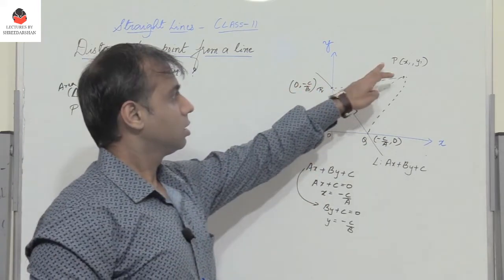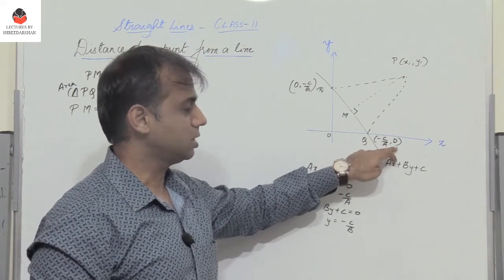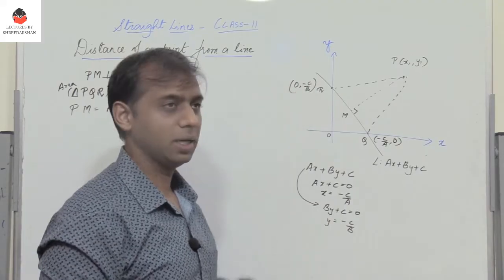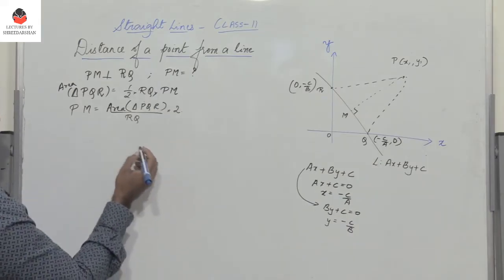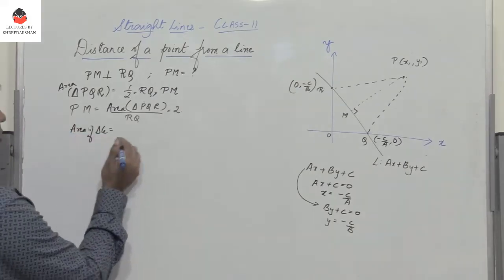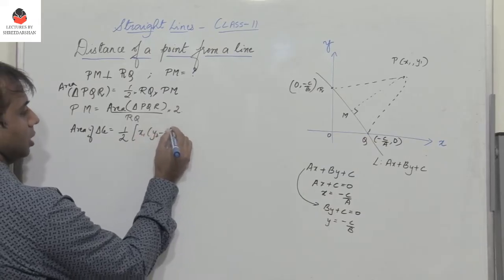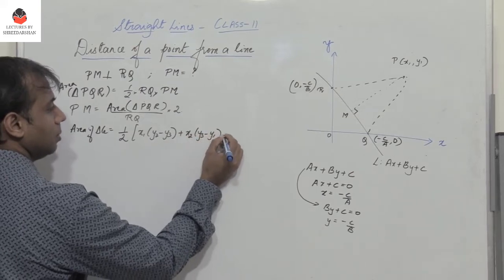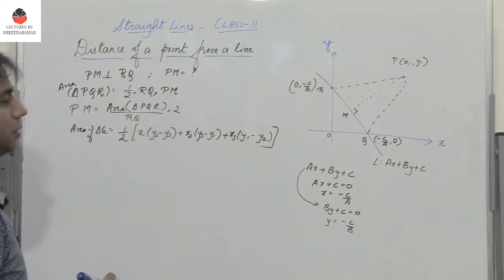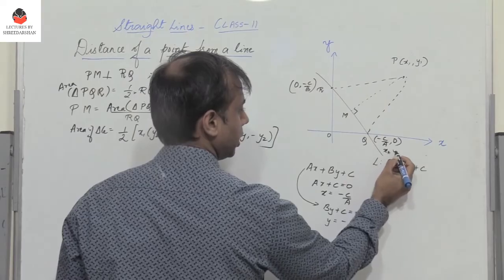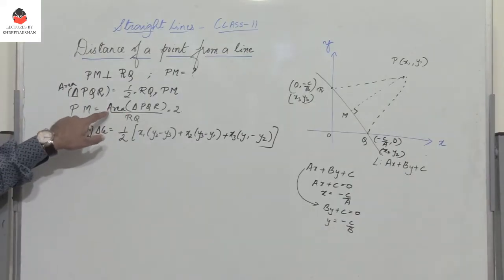We have coordinates: P(x1, y1), Q(−C/A, 0), and R(0, −C/B). The area of a triangle with vertices (x1,y1), (x2,y2), (x3,y3) is given by: ½ |x1(y2 − y3) + x2(y3 − y1) + x3(y1 − y2)|.